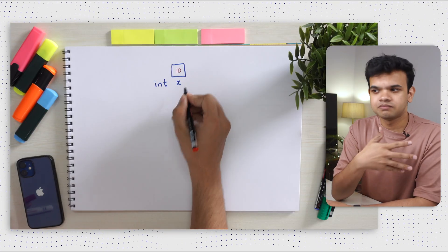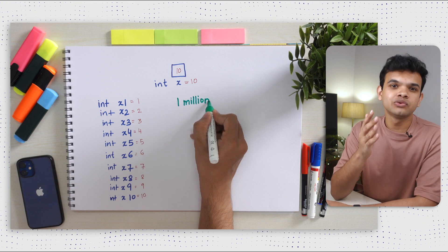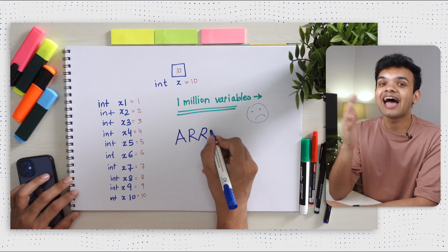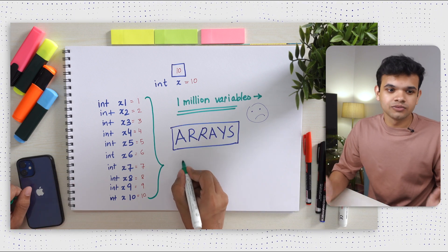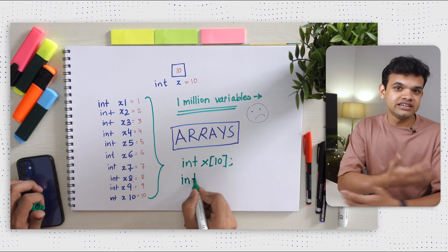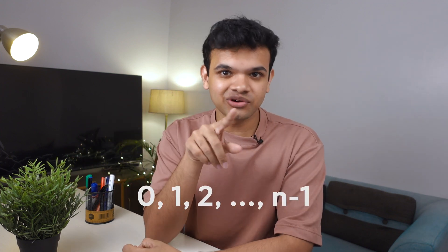Let's say you need to define a variable — pretty simple. Let's say I ask you to define 10 more variables, that's a little tiring but doable. What if I ask you to define a million variables? That's where arrays come in. Arrays are basically a list of variables — you mention the type of variable you need, write the name of the variable, and how long a list you want. So I can write an integer array of size 10, or an integer array of size 1 million in one line. You use square brackets to access or update data in the array. It starts from zero and goes till n minus one — that is zero-based indexing.